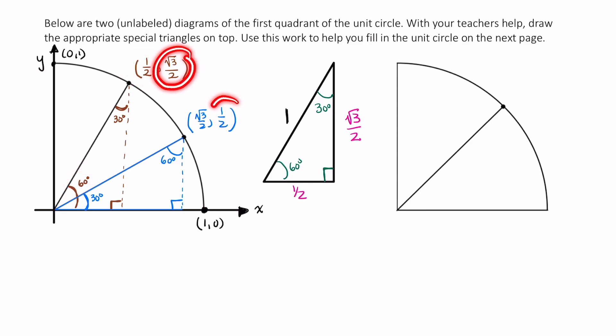And the y coordinates give you the sine values at these angles. Sine of 30 degrees is 1 half. Sine of 60 degrees is root 3 over 2.